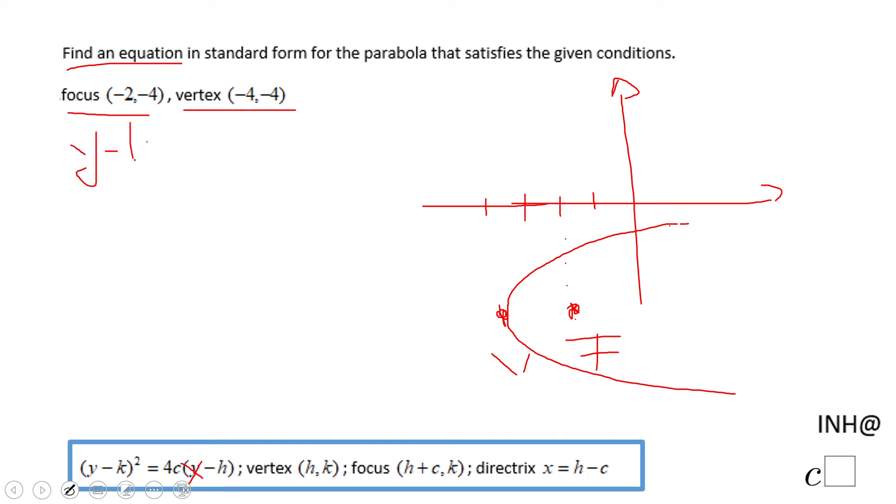So let me write that equation. Y minus k squared equals 4c, x minus h. H and k are the coordinates of the vertex. So we're going to have y minus negative 4 squared equals 4. And now c.